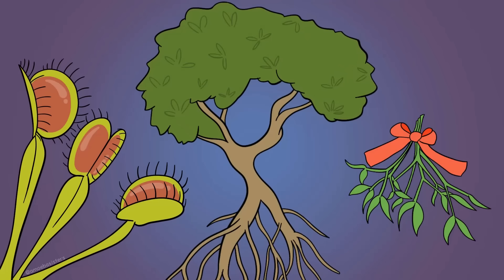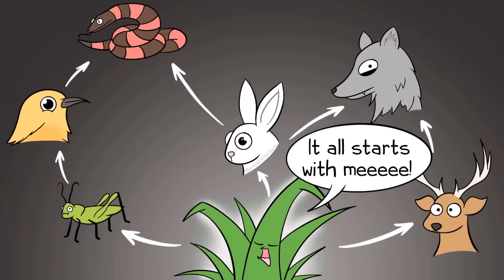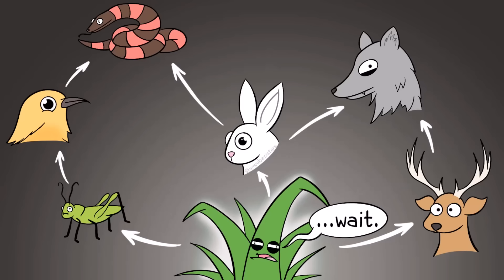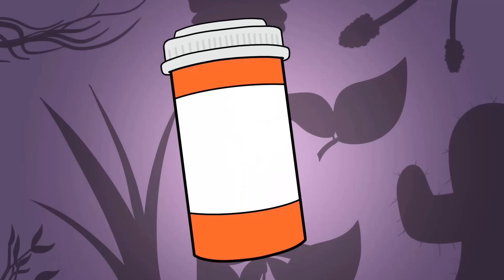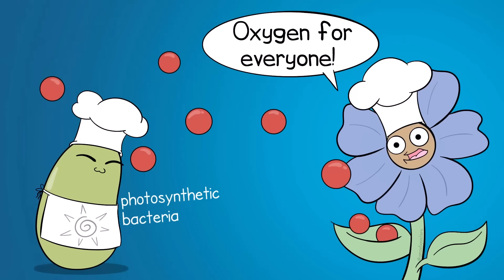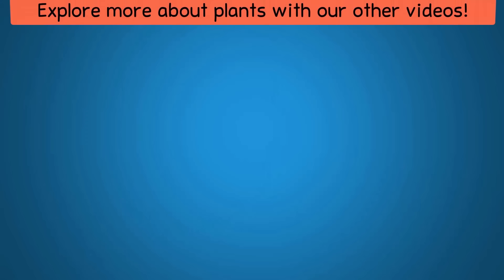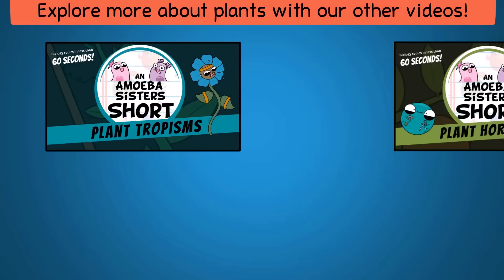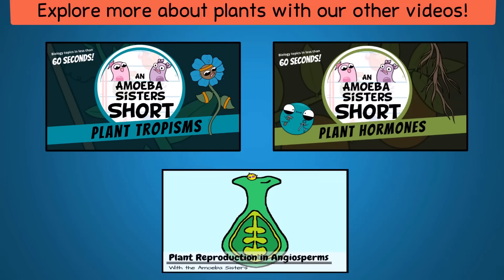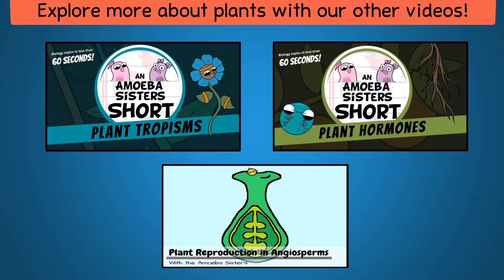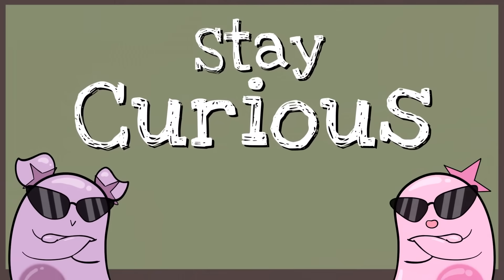There are a ton of fascinating plant structures and adaptations we encourage you to explore. Don't forget about the value of learning about plants — after all, plants are essential for life. They are producers, which means they are the main support for food webs. Many medications today are derived from plants. And while plants aren't the only photosynthetic organisms, plants are definitely known for producing oxygen through photosynthesis. Explore more with our shorts on plant tropisms and plant hormones, and our entire video on plant reproduction. That's it for the Amoeba Sisters — we remind you to stay curious.